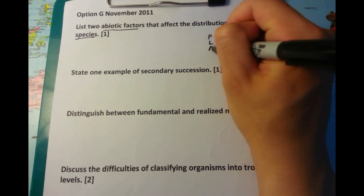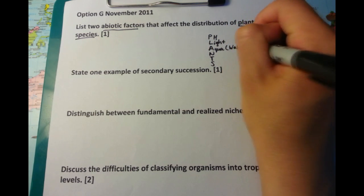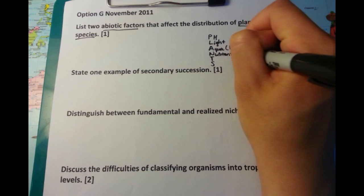So if you recall in my previous paper, I gave you a nice little mnemonic, which is plants. And they stand for the six different abiotic factors which you need to know.